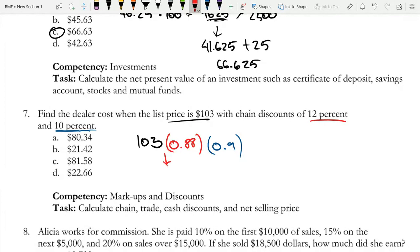103 times 0.88 is 90.64. And now I have to multiply this by 0.9. And that leads us to 81.576, which rounds to 81.58.